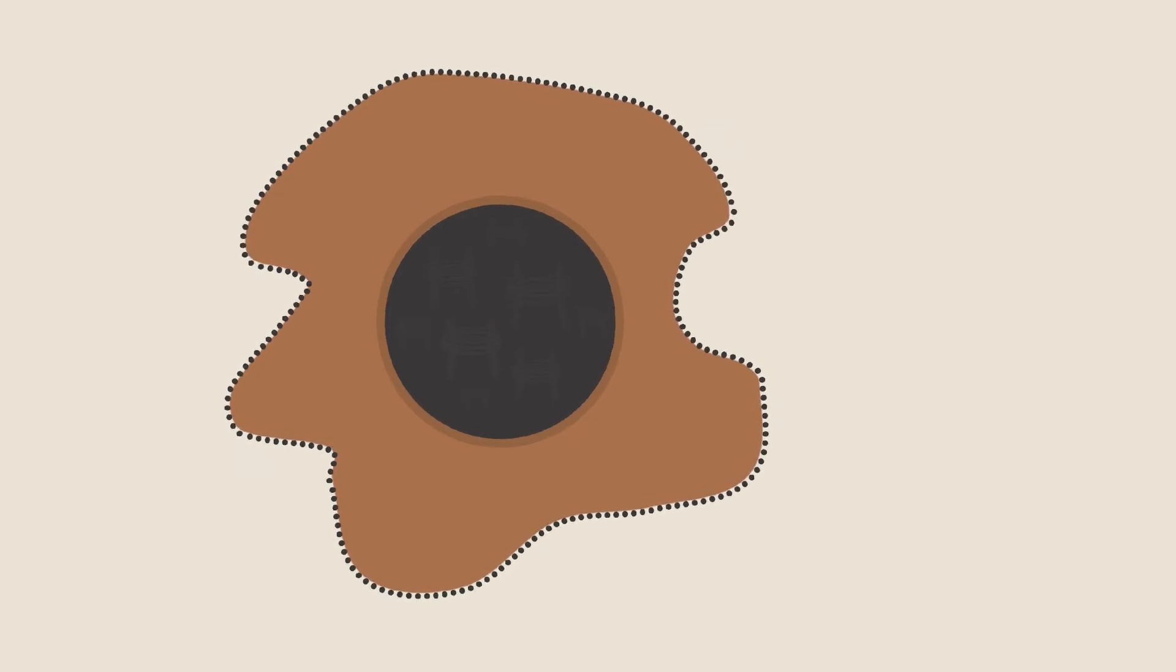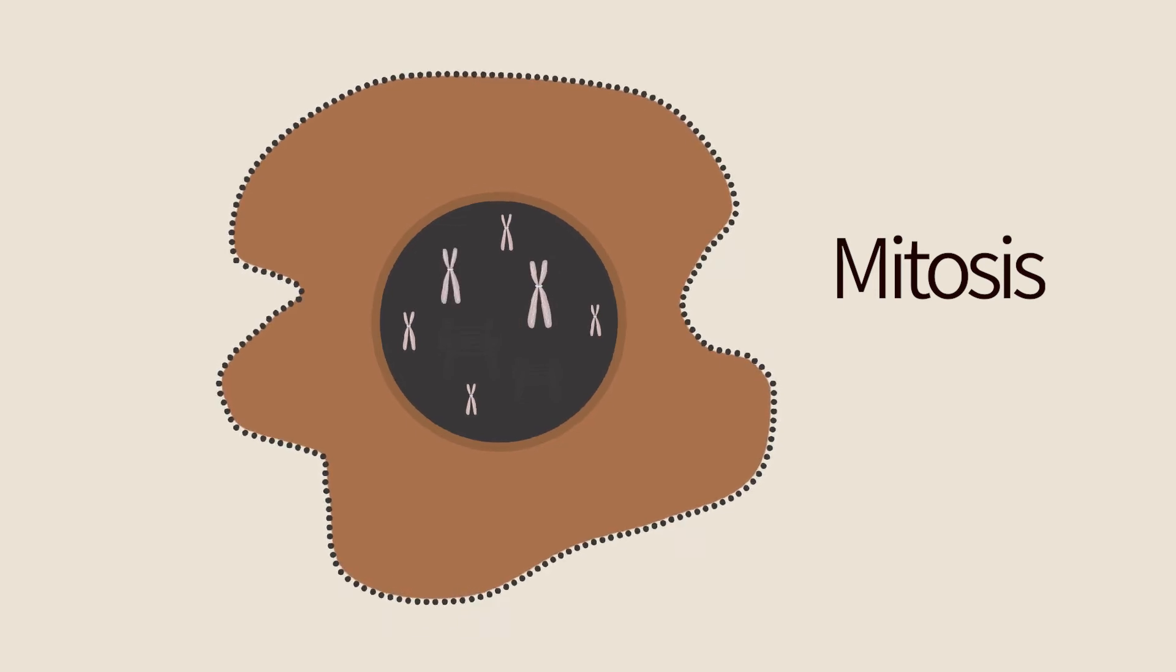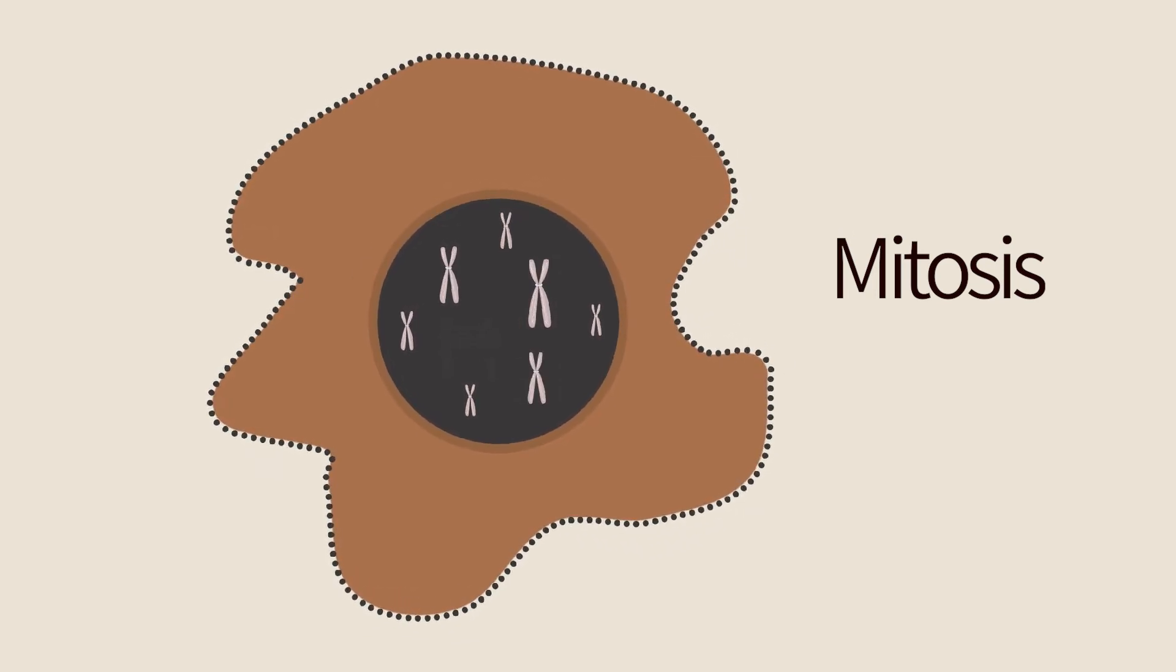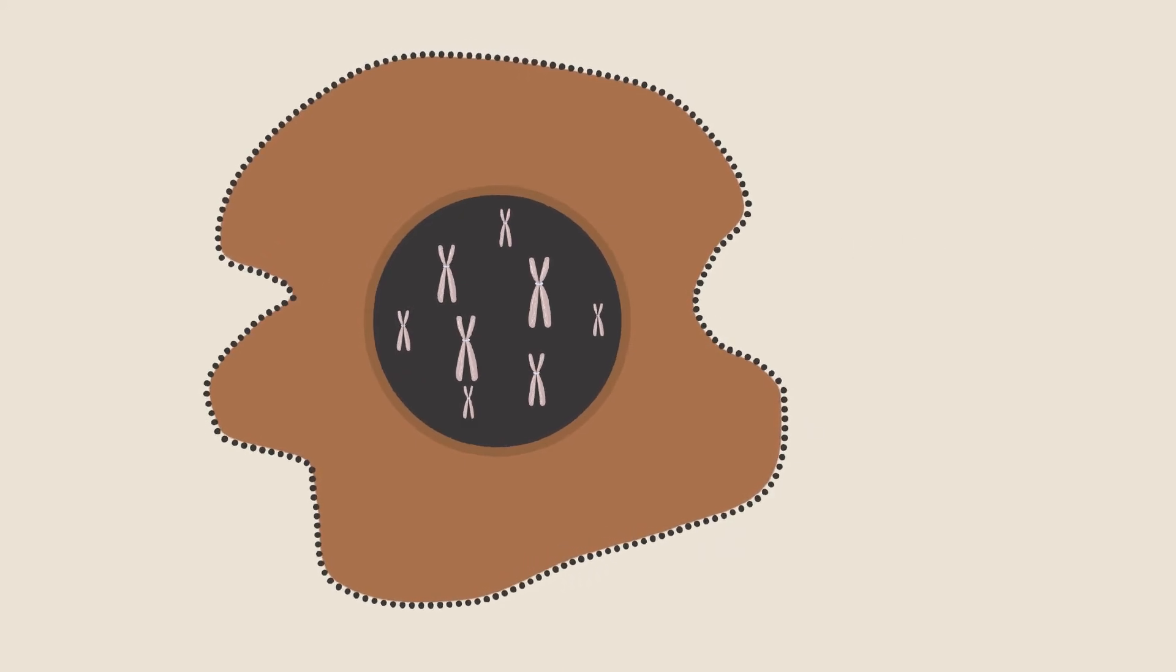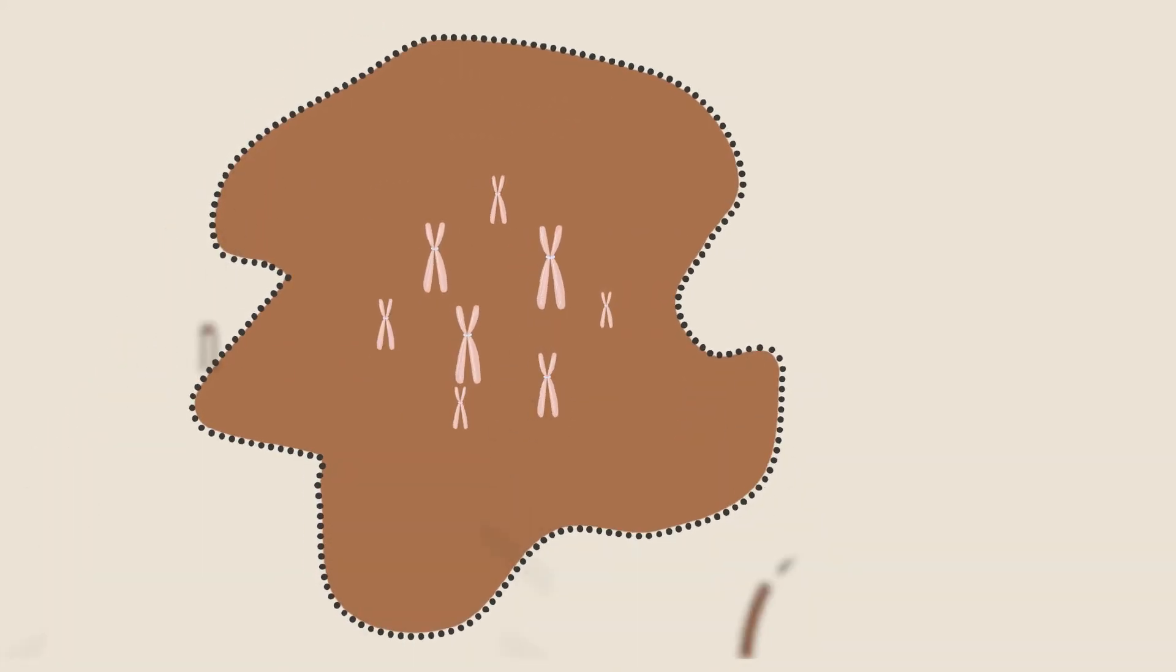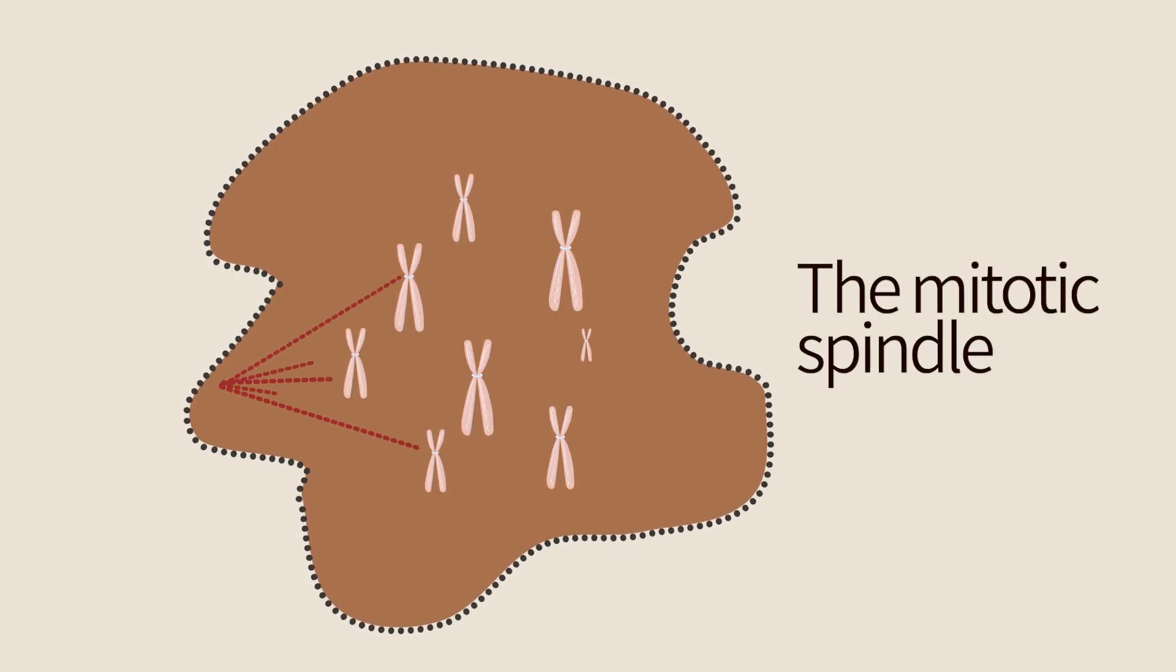After replication and additional events, the cell gradually enters mitosis. The chromosomes condense and attain their well-known shape. The nuclear envelope breaks down, the mitotic spindle, a fiber network that binds the chromosomes and connects them to the poles of the cell, is formed.